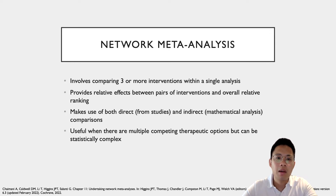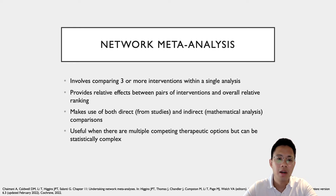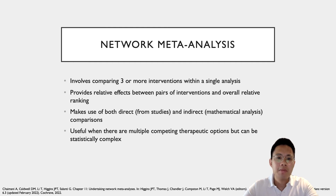A network meta-analysis involves comparing three or more interventions within a single analysis, providing relative effects between different studies as well as head-to-head comparisons across different types of interventions. It makes use of both direct and indirect comparisons — direct meaning from a study that directly compares A and B, and indirect involving statistical methods to compare across different treatment groups from different studies. This can sometimes be mathematically complex, but the advantage is that you can compare across different therapeutic options — for example, if studies A vs B and B vs C exist, a network meta-analysis can potentially derive the comparison between A and C.